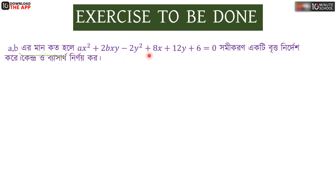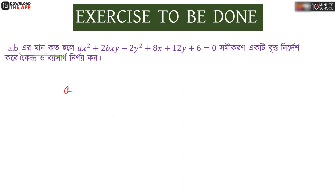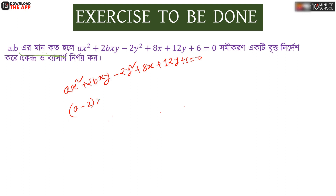Now consider: A x squared plus 2b xy minus 2y squared plus 8x plus 12y plus 6 equal to 0. We are going to talk about the terms x squared plus y squared and 2bxy.